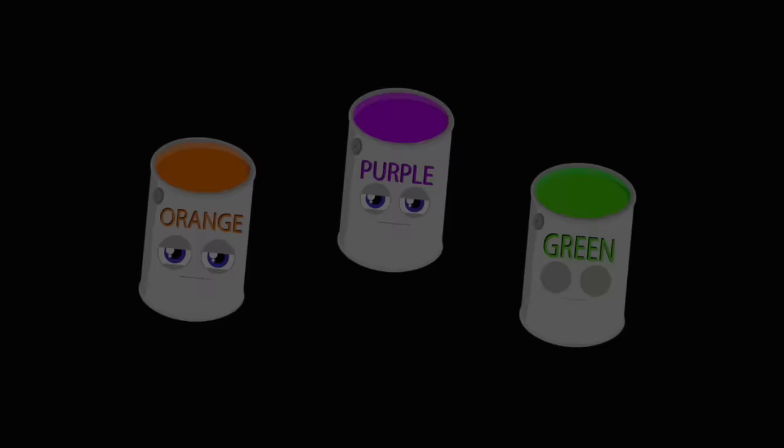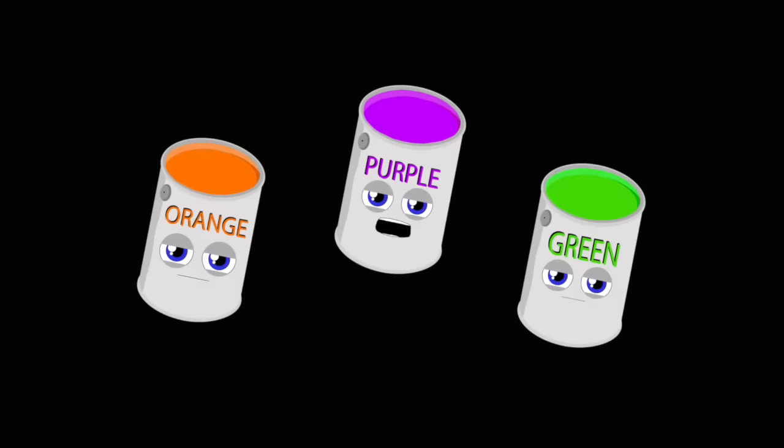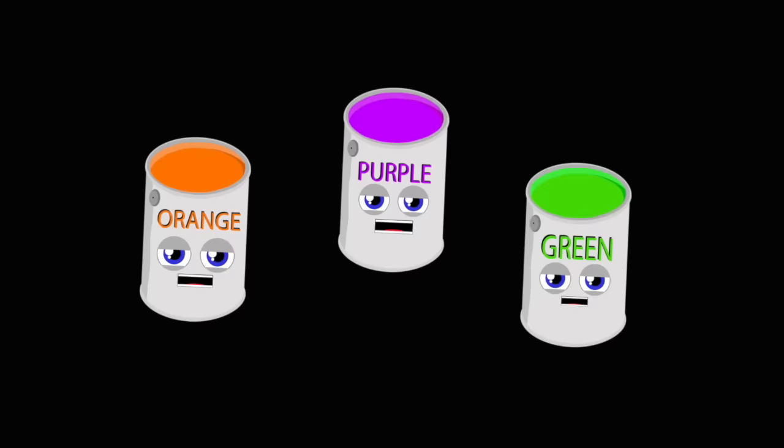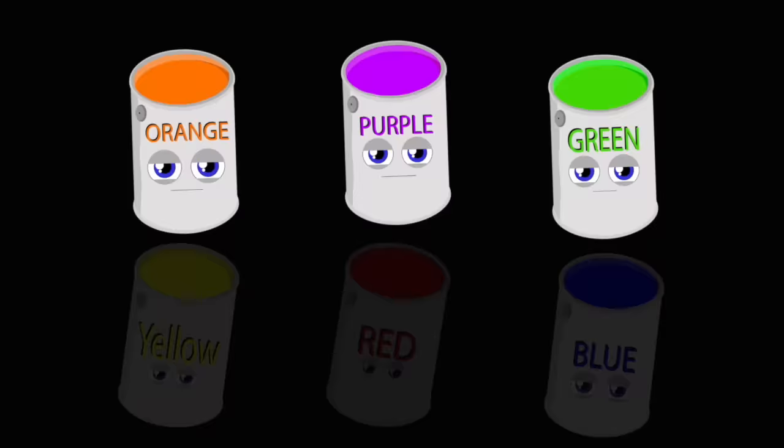We are the secondary colors: orange, purple and green. We're made from mixing the primary colors. Now you see us on your screen.